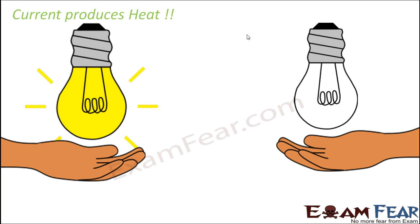You will see that in the first case, when the bulb is glowing, you feel hot, whereas in the second case you do not feel hot. So what does it show? The bulb is glowing because current is flowing through it, so current is producing some heating effect. When there is no current flowing through the bulb, there is no heat being emitted. This is a simple experiment you can try yourself to prove that current produces heat.